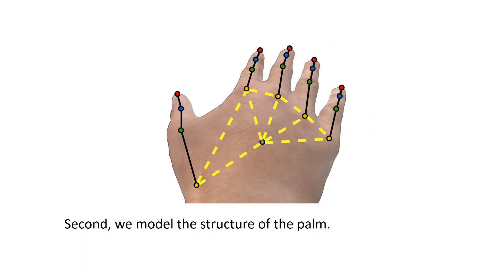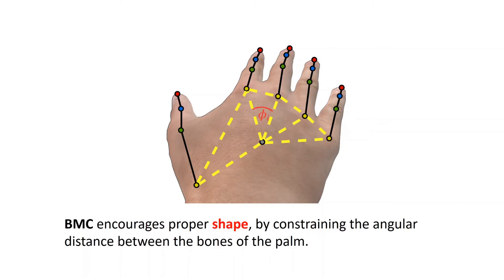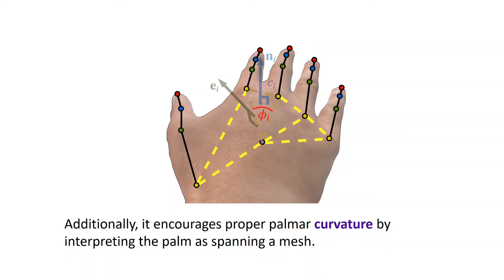Second, we model the structure of the palm. BMC encourages proper shape by constraining the angular distance between the bones of the palm. Additionally, it encourages proper palmar curvature by interpreting the palm as spanning a mesh.